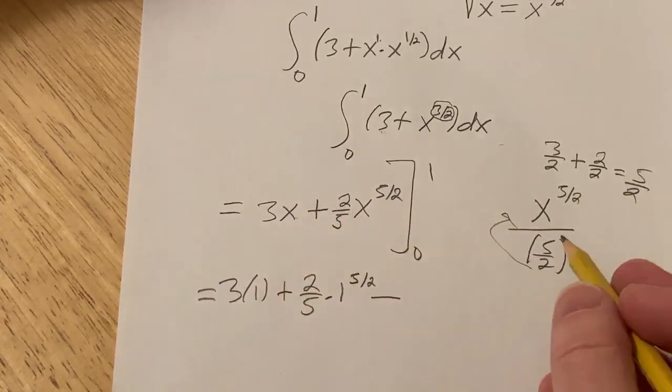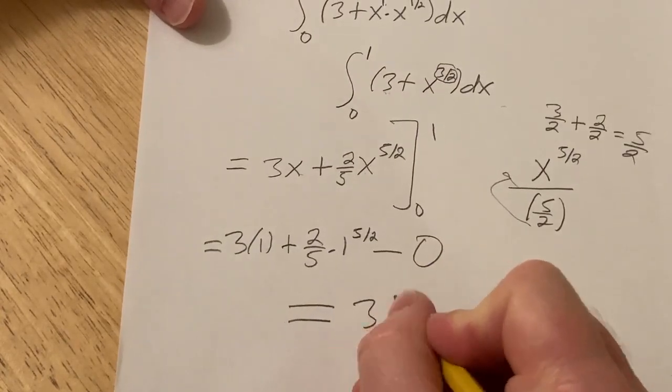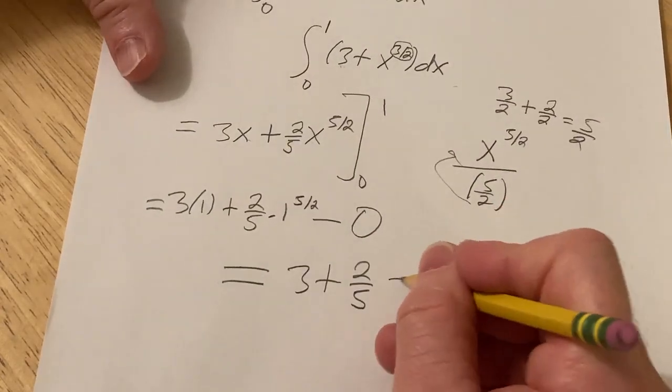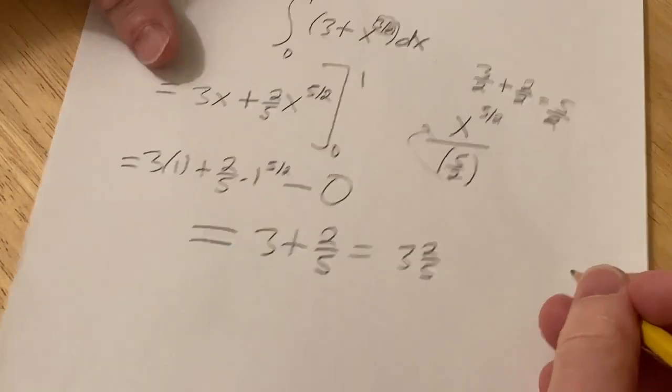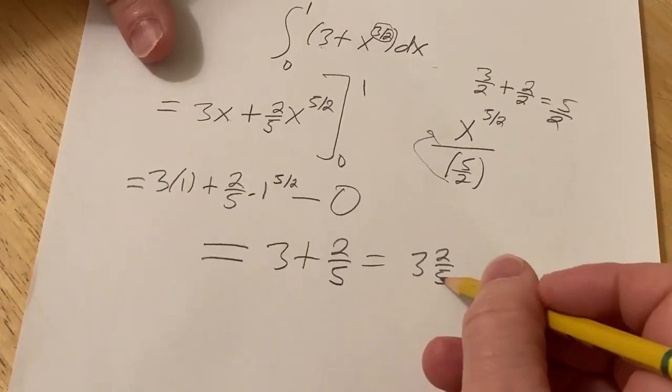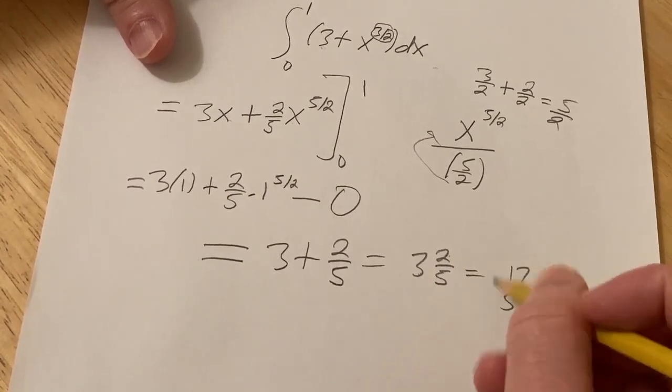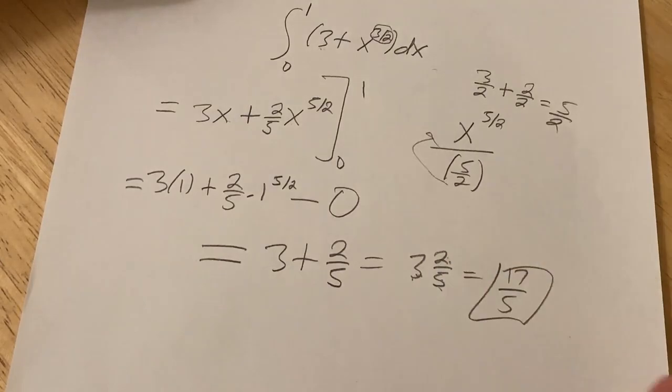This is equal to 3 plus 2/5. There are a couple ways to add this. Let's do it the old school way—this is 3 and 2/5 as a mixed fraction. Now watch this: 5 times 3 is 15 plus 2 is 17, so you get 17/5.